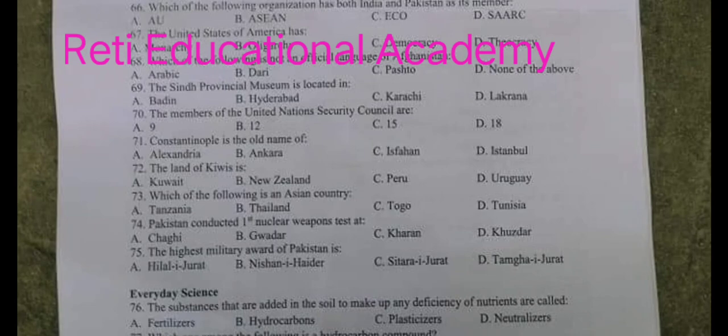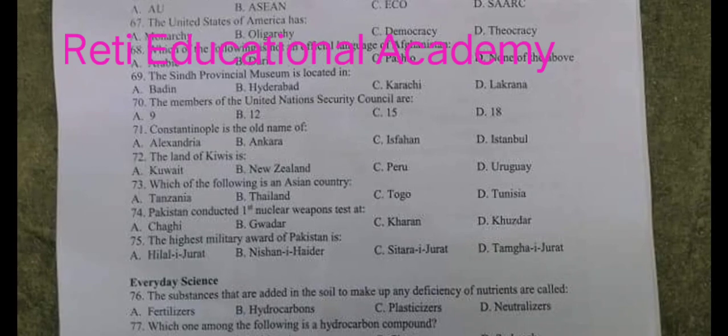Question number 73. Which of the following is an Asian country? A. Tanzania, B. Thailand, C. Togo, D. Tunisia. The right option is B. Thailand.